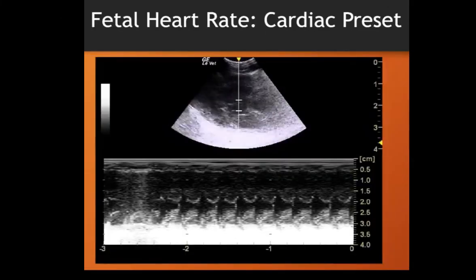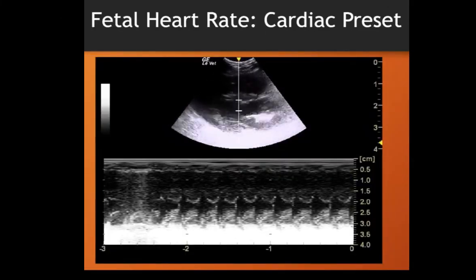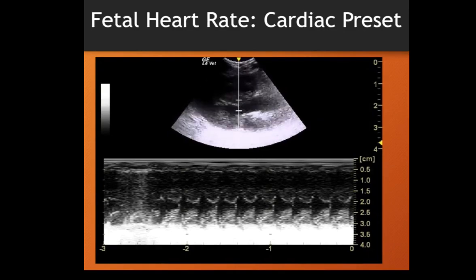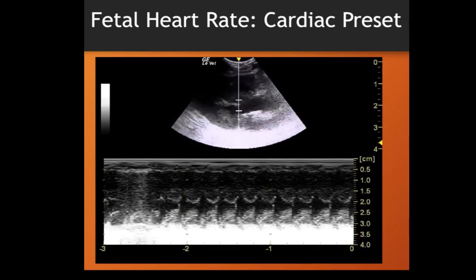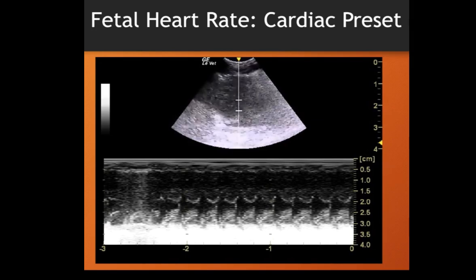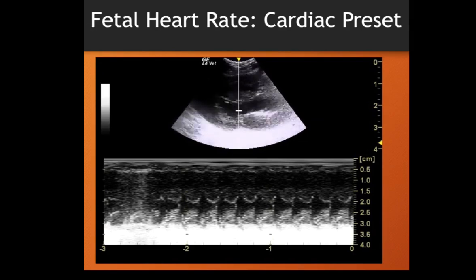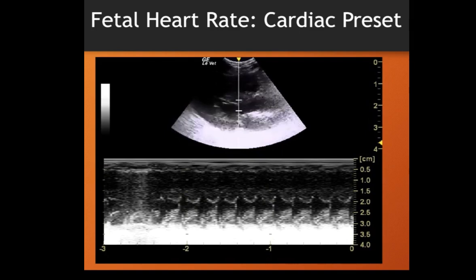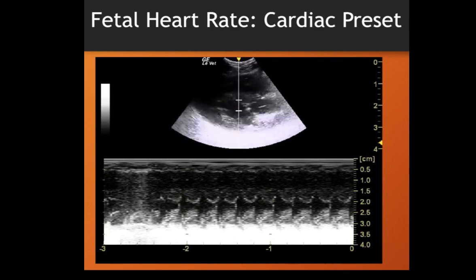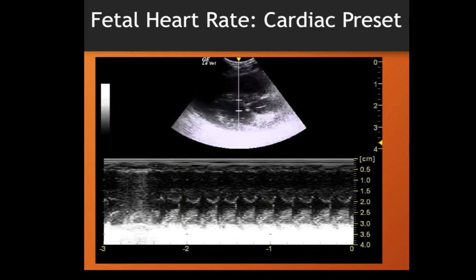Step number one: you want to identify the fetal heart and zoom it in. You want the heart to look as big as possible so that you may get the most accurate readings. In this particular video, I'm actually using an adult heart as an example; with the abdominal preset, I will do the measurements on actual fetal hearts.